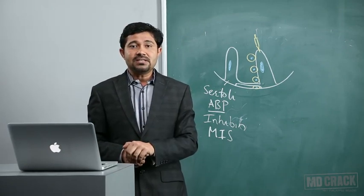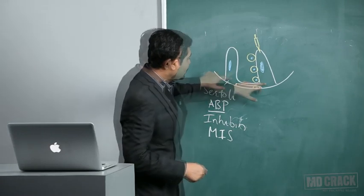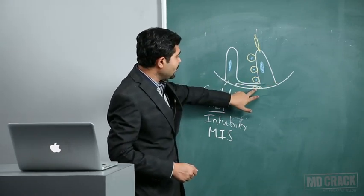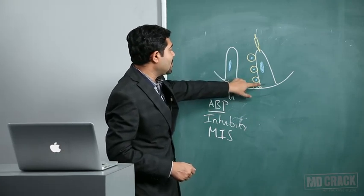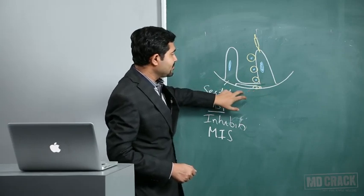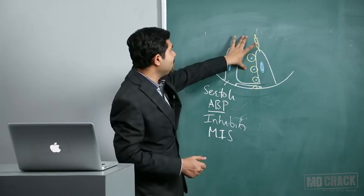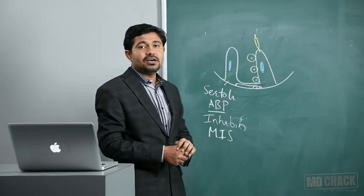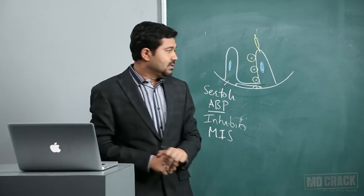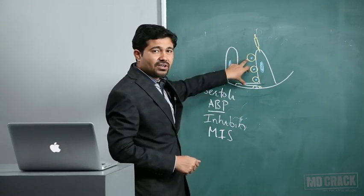Another function of Sertoli cells: they join with each other at the base, forming a barrier. The spermatogonia must cross this barrier. This separates the interstitium from the lumen of the seminiferous tubule, and this is called the blood-testis barrier. The blood-testis barrier is important to preserve the spermatogonia present there.